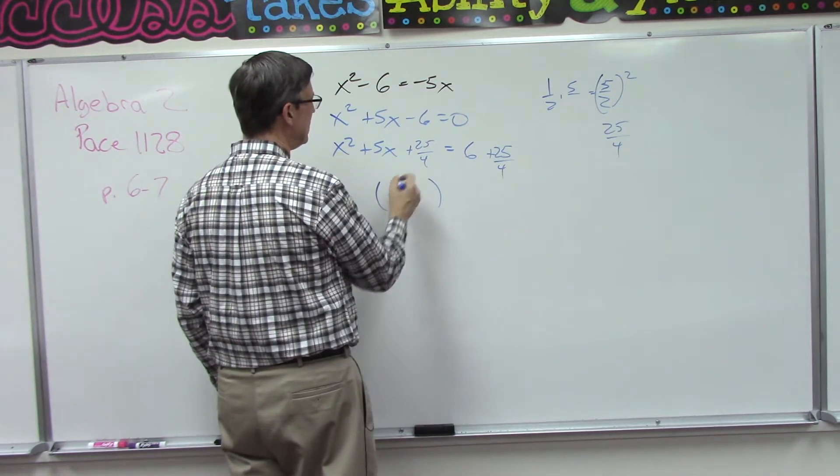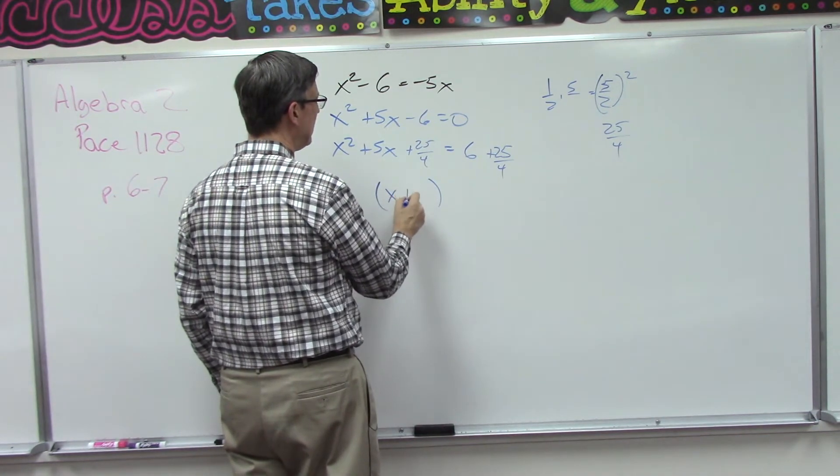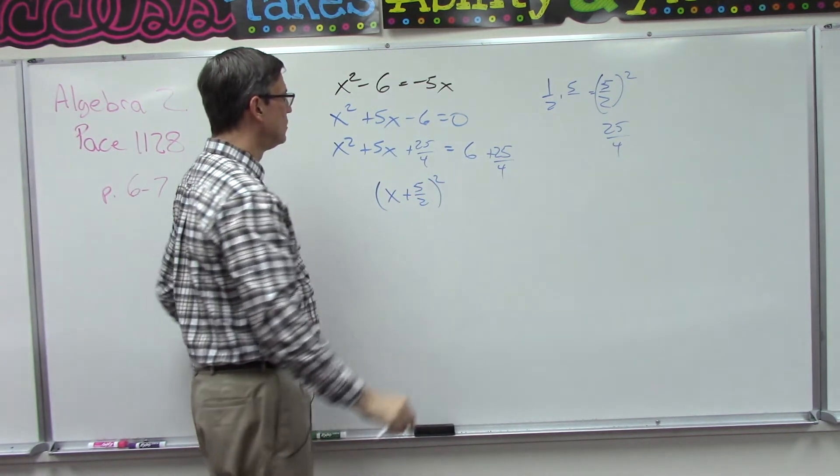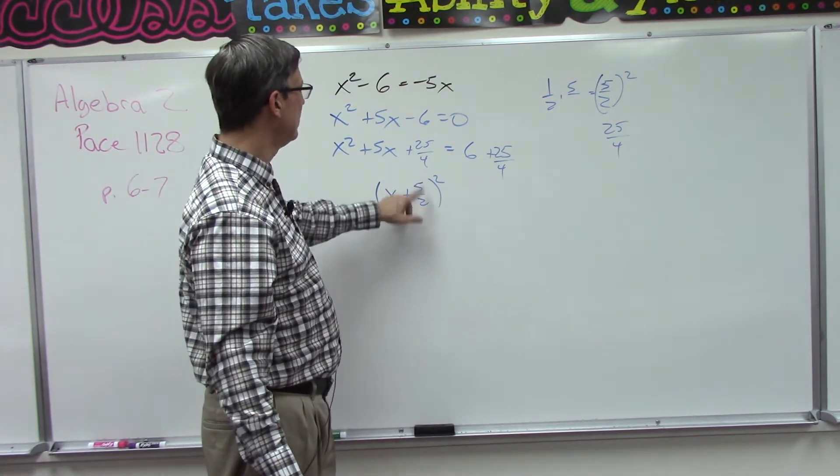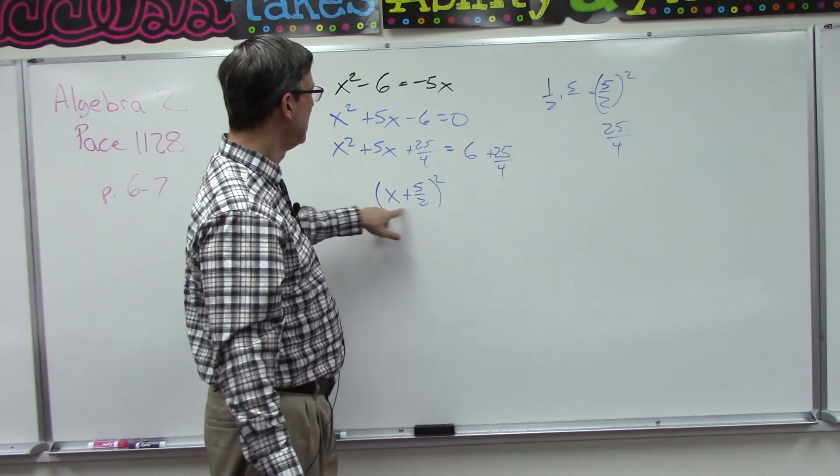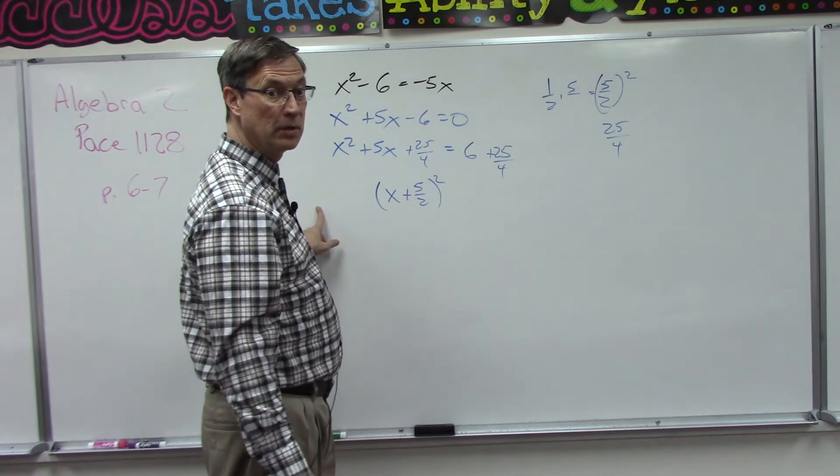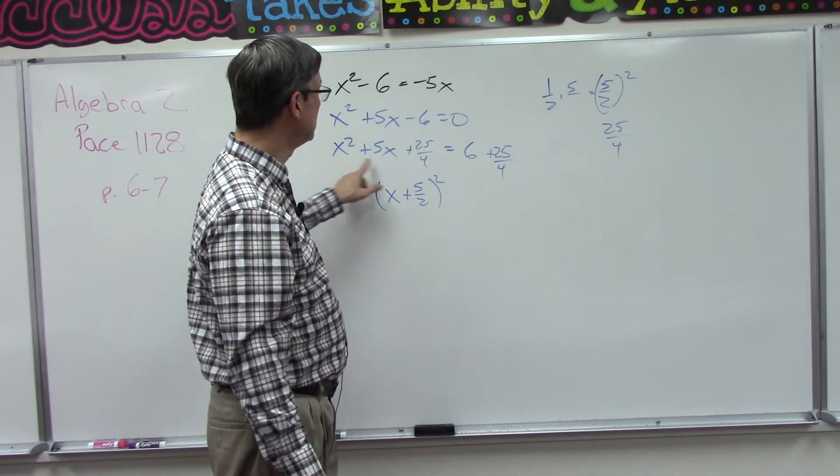Alright, now the whole reason that we did this is because we want to end up with a quantity squared, so x plus 5 halves squared. So half the middle term. If we squared this quantity using the distributive property, the FOIL method, we would get this back again.